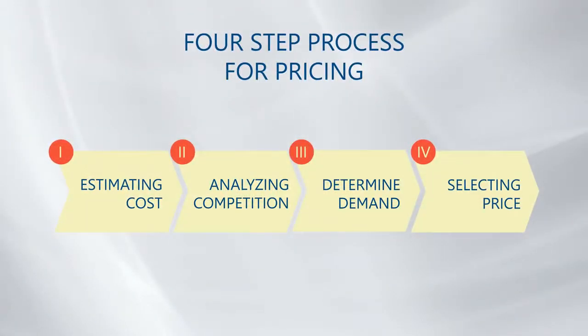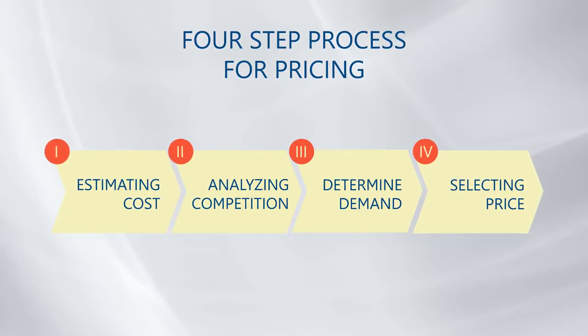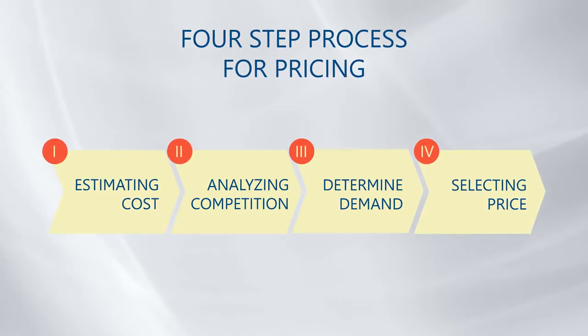My recommendation to organizations would typically be to go through a four-step process: ideally to conduct the cost-based pricing approach, the competition-based pricing approach, as well as the customer-based pricing approach. All three pricing approaches might give you different recommendations about what the optimal, right price is. Hence the fourth stage is really working with that kind of information and figuring out what might be the right price.